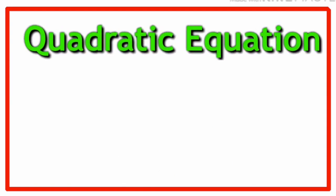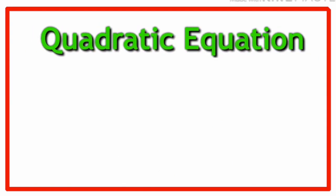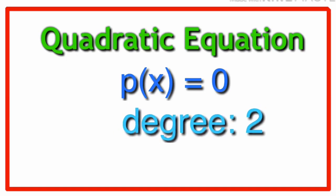We can say that the quadratic equation is in the form of p of x equal to zero where p of x is a polynomial of degree 2.